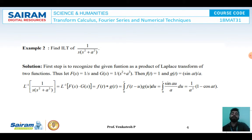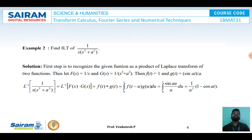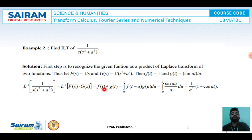After applying the inverse Laplace Transform: the inverse Laplace of f(s) gives f(t) equal to the inverse Laplace of 1/s, which is 1. Similarly, the inverse Laplace of g(s) gives g(t) equal to the inverse Laplace of 1/(s² plus a²), which is sin(at)/a. So f(t) equals 1 and g(t) equals sin(at)/a. Applying the formula, the inverse Laplace of 1/(s·(s² plus a²)) equals the integral from 0 to t of f(t minus u)·g(u) du.